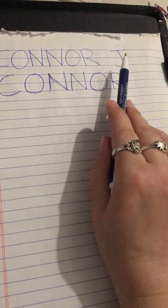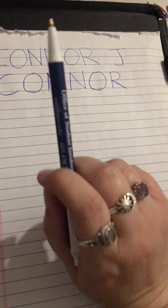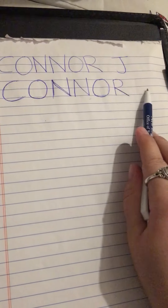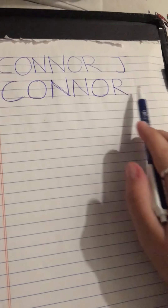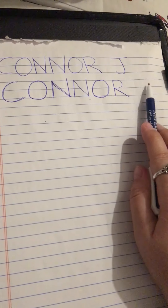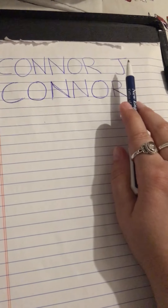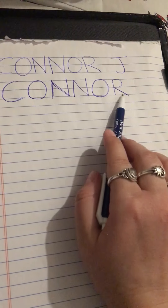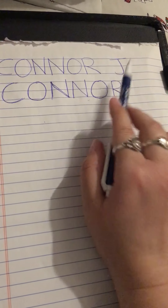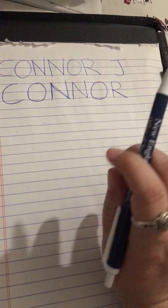Now if we're writing Connor J's name we're going to make the letter J. We're going to give it some space though — I wrote a little bit big but we're going to give it some space because J is not in the name Connor. J is the first letter of his last name.